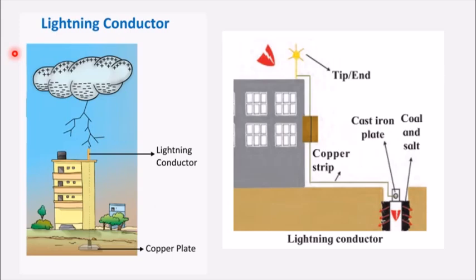Instead of the building getting damaged, the copper wire takes all those charges and sends them to the ground, preventing damage. When such a lightning conductor earthing is fixed on a tall building, the surrounding area is also protected from lightning. You may also see that in tall buildings around you there is a wire connected on top — a device fixed at the top called the lightning conductor — so that lightning does not strike the building and cause damage.